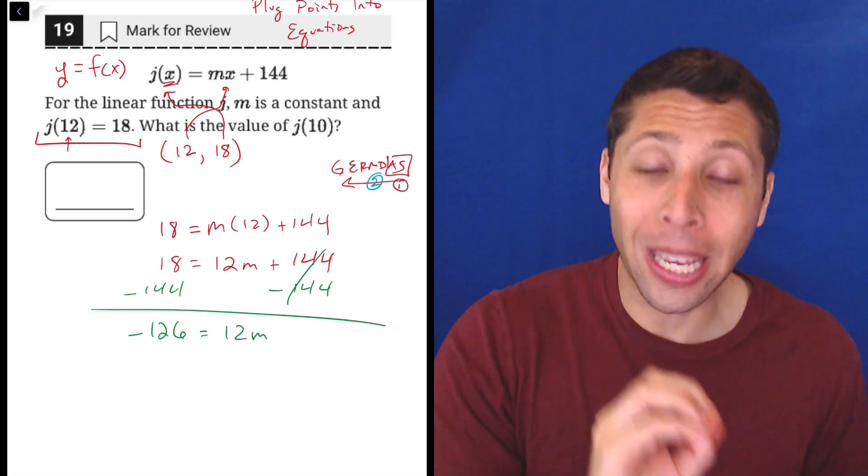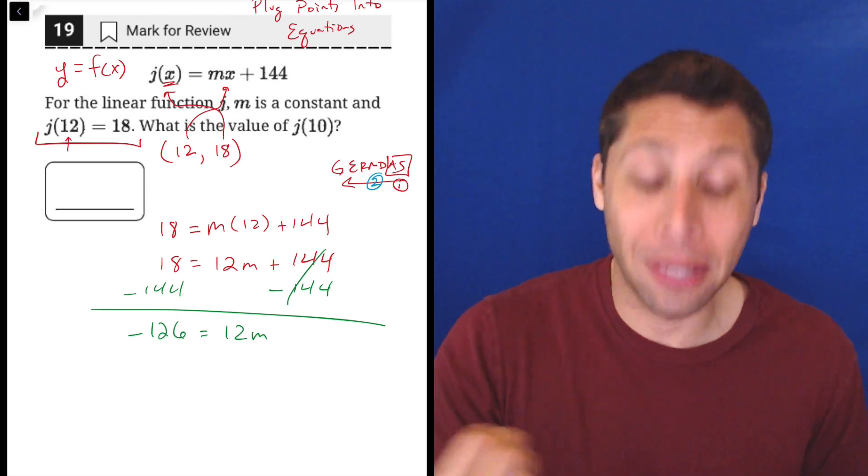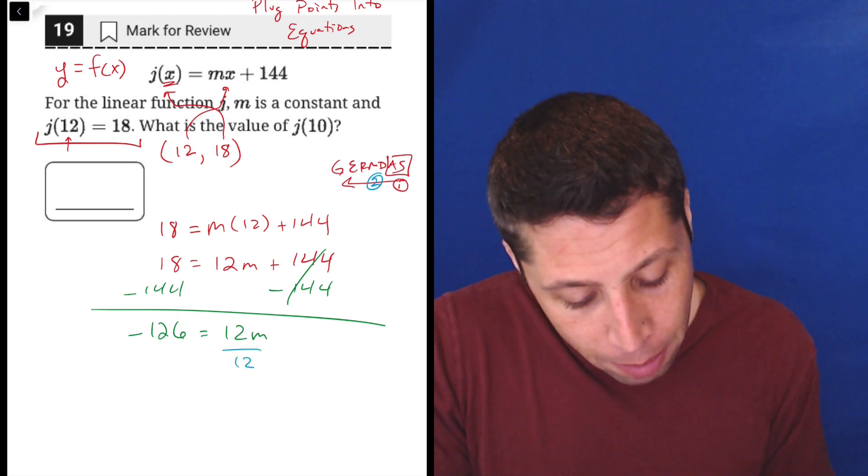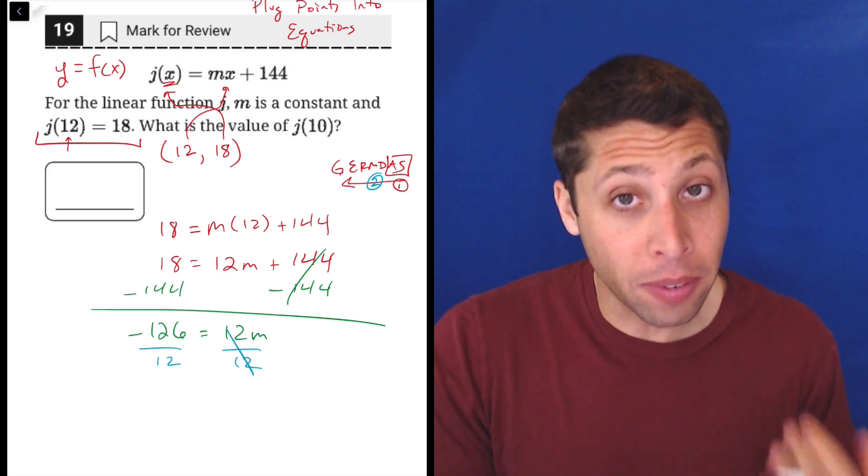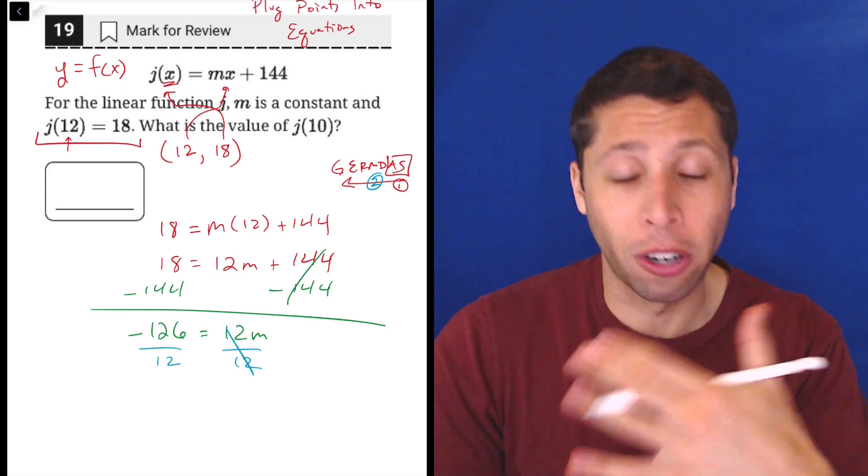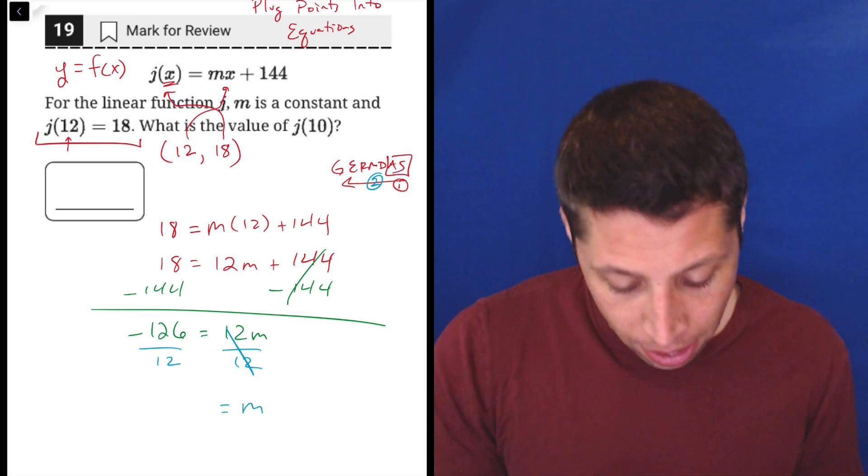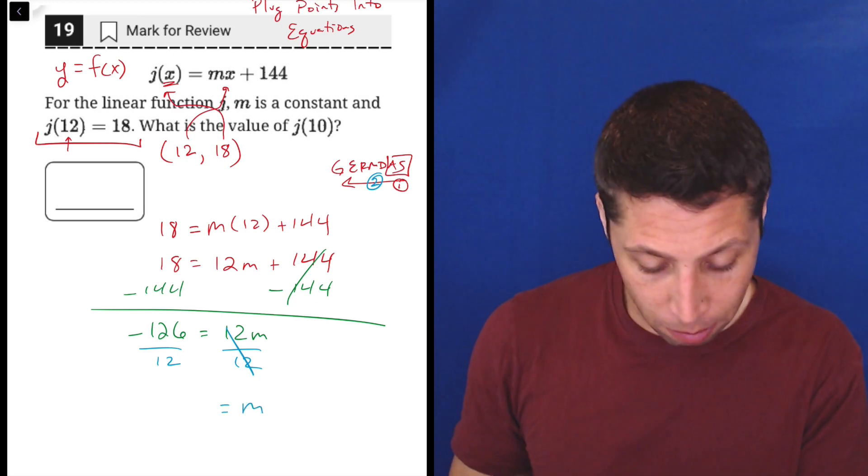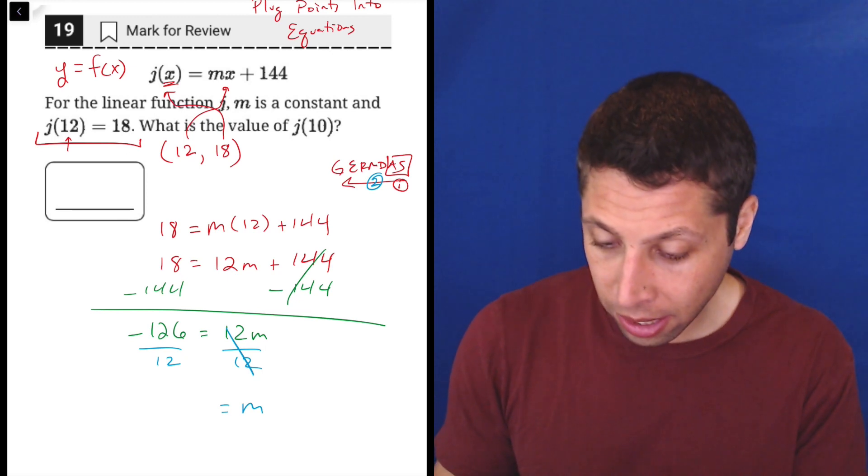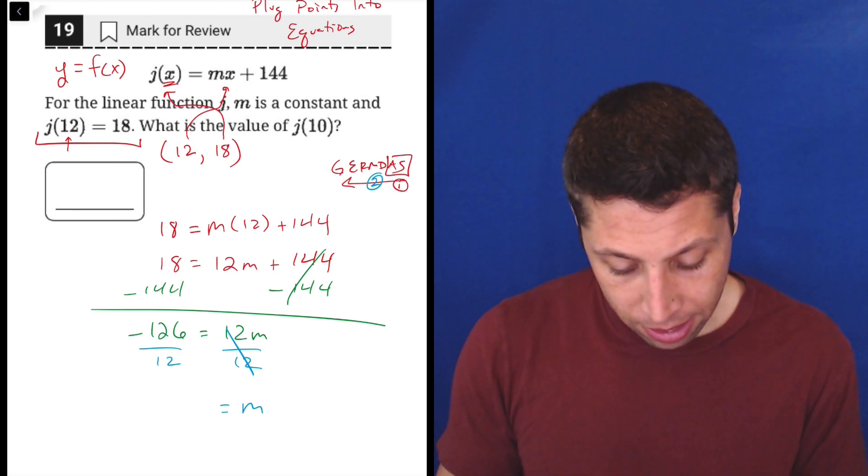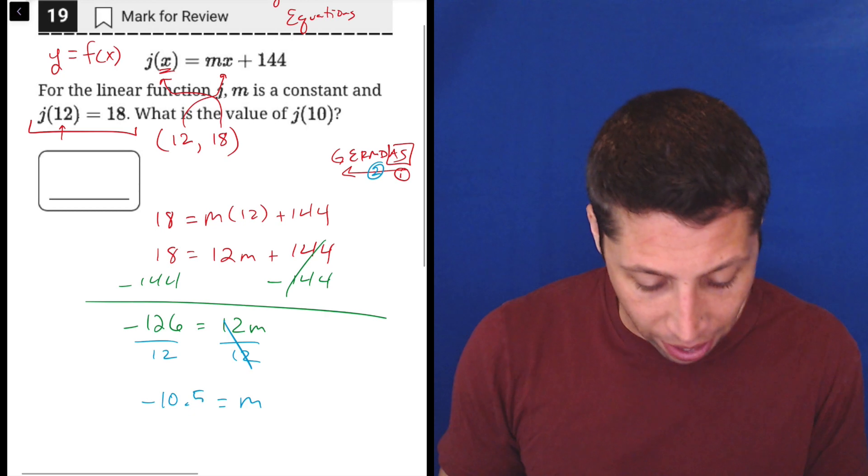And the way to do that is to do its opposite, division. So we're going to divide both sides by 12. And when we do that, we're going to get rid of it because 12 divided by 12 is 1. And 1 times m is just plain old m. And then 126 divided by 12, this is going to be messy. So negative 126 divided by 12 is negative 10.5. Okay.